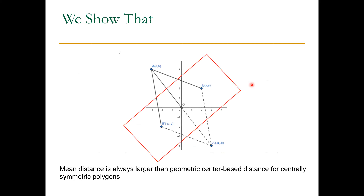We also showed that this is only for centrally symmetric polygons. When our data collection units — like census blocks or block groups — are somewhat symmetric, the mean distance (distance prime) is always larger than geometric center-based distance. If we use the geometric center of a particular polygon to represent it and measure the distance, we might have issues — there is always an underestimate of distance when the polygon is symmetric.